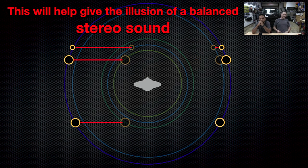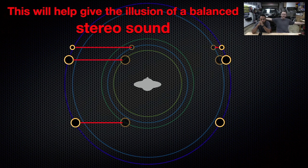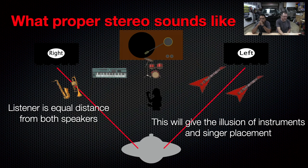And what this will help give you is the illusion of balanced stereo sound. By moving these planets, as it were, out to the main ring, that is going to give us the illusion of what we were trying to achieve at the beginning — what proper stereo sounds like. And that, my friends, is the basics of time alignment.